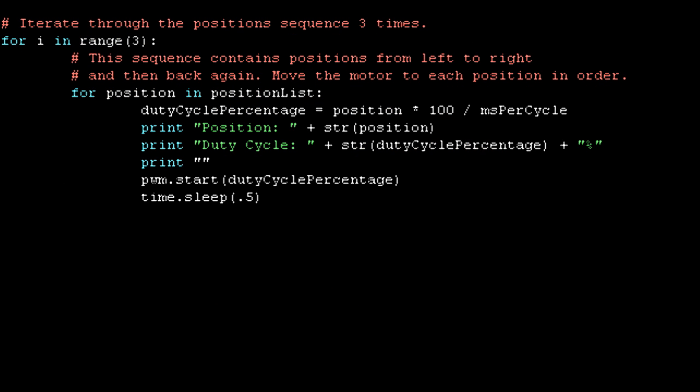Now that we have most of the data we need to calculate our PWM signal, I have a set of nested loops here. The inner loop just goes one step at a time through the positions specified in the sequence that I constructed up above, and it calculates the duty cycle percentage, which is just the position converted to a percentage based on the milliseconds per cycle.